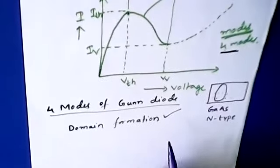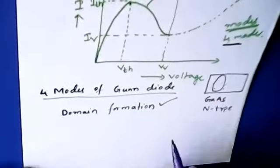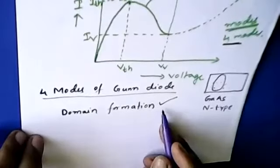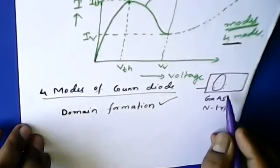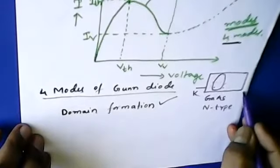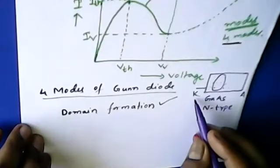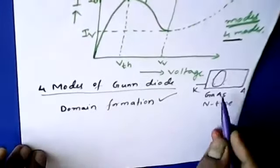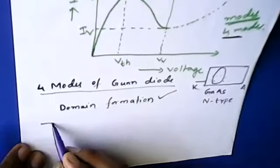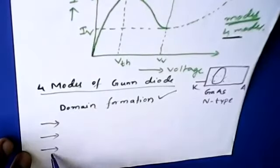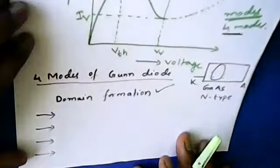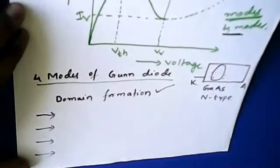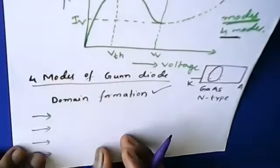This may be asked as a two or three marks question, so you need to explain what domain formation in the Gunn diode is. When the domain is formed, it will not stay within the device for a longer time. The device has a cathode and an anode, and the domain keeps on moving from cathode to anode.